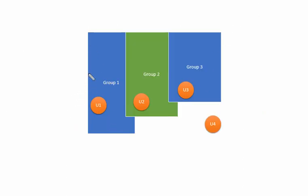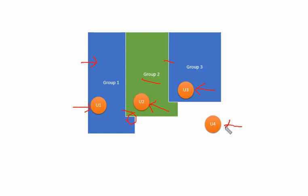In the diagram, group 1 is not a member of any other group and has user 1 as a direct member. Group 2 is a member of group 1 and has user 2 in it. Group 3 is a member of group 2 and has user 3. User 4 is not a member of any of the above groups. Note that all these groups are Active Directory security groups.